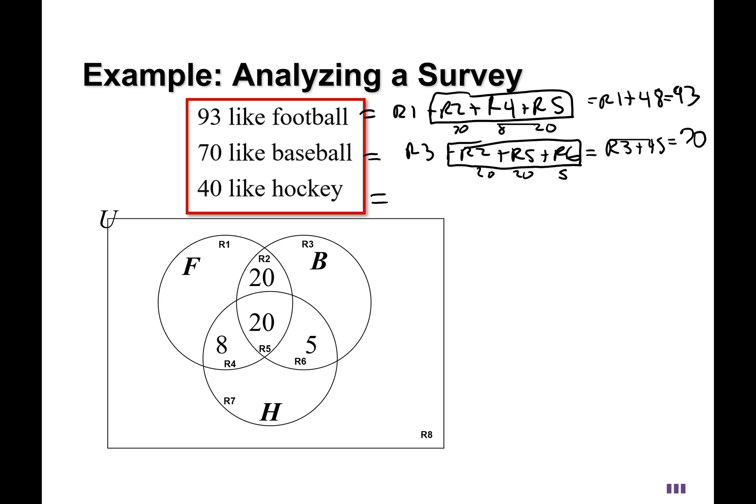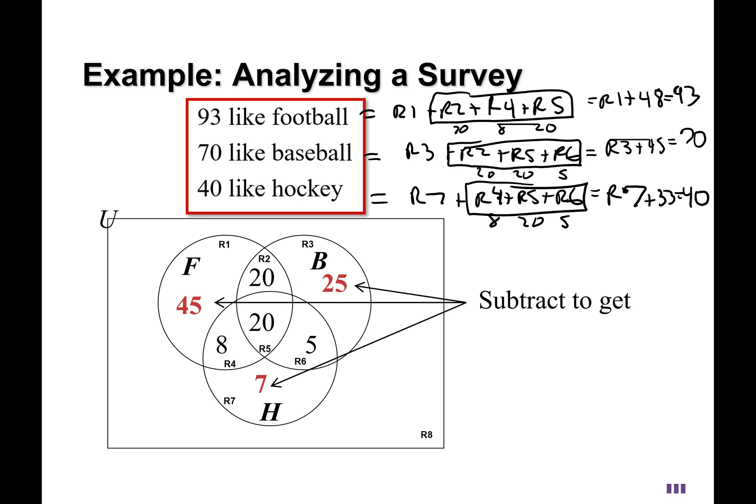Finally, the hockey circle, made up of region 7, region 4, region 5, and region 6. 4, 5, and 6 are 8, 20, and 5. Those add up to 33. So region 7 plus 33 should be that 40. And we subtract the 48 from the 93, the 45 from the 70, the 33 from the 40. The result, then, will be what regions 1, 3, and 7 are. 48 subtracted from 93 is 45. 45 subtracted from 70 is 25. And then finally, 33 subtracted from 40 is 7. So we put those in those regions.